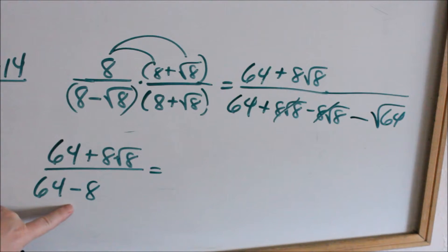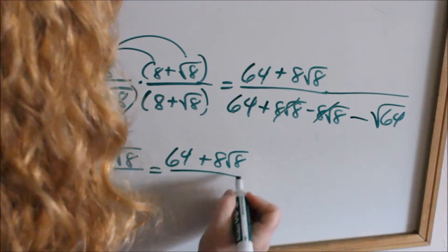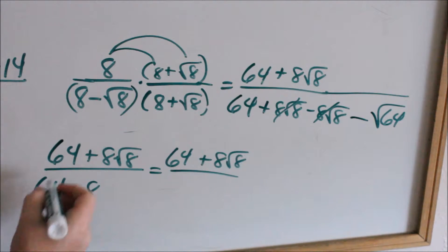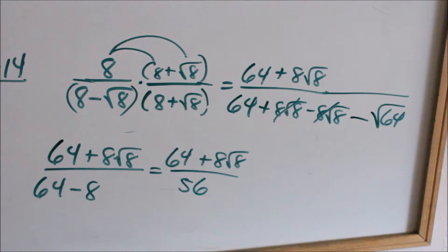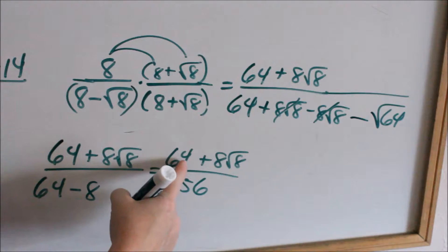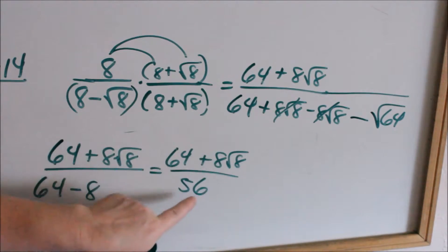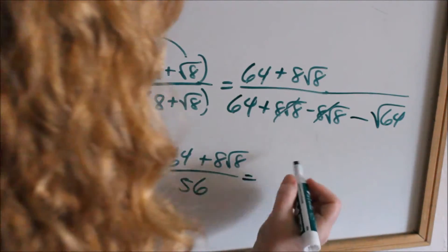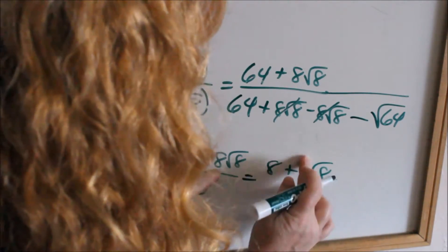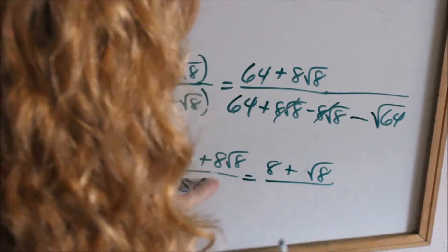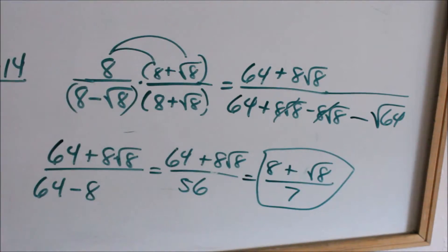Now I'm going to combine my numbers in the denominator. 64 plus 8 square root of 8, and 64 minus 8 is 56. Make sure I did that right — that should be 64. Now you look to see: can I reduce my whole numbers by the same thing? Yes, I can reduce each one of these numbers by 8. So 64 divided by 8 is 8, dividing by 8 gives just 1 square root of 8 — and you don't have to write the 1 — all over 56 divided by 8, which is 7. And this would be your final answer.